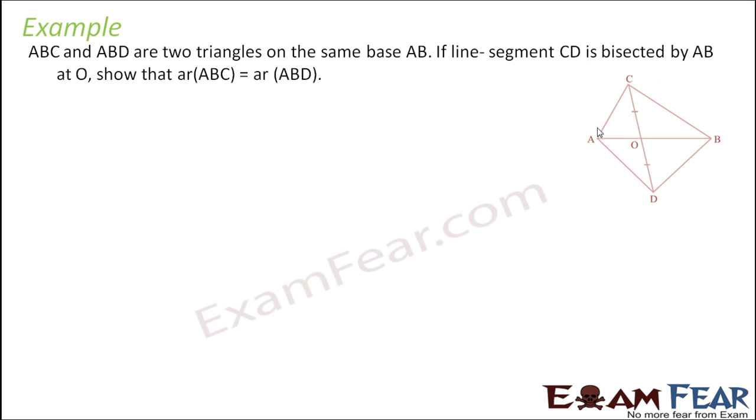ABC and ABD are two triangles on the same base AB. Line segment CD is bisected by AB at O, so AO is equal to OD given. We have to show that area of ABC is equal to area of ABD.